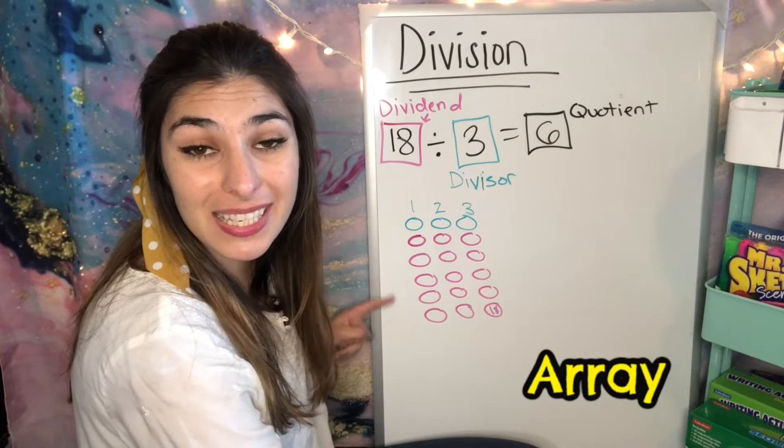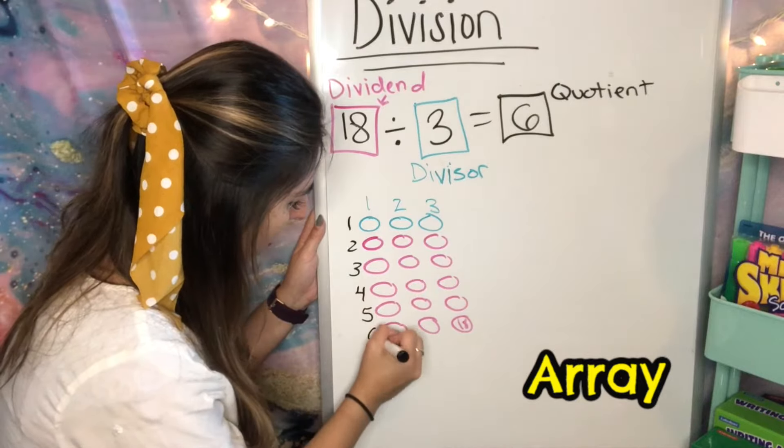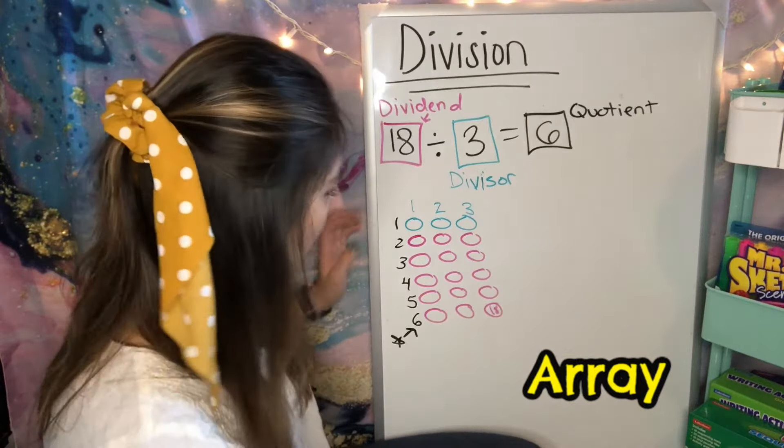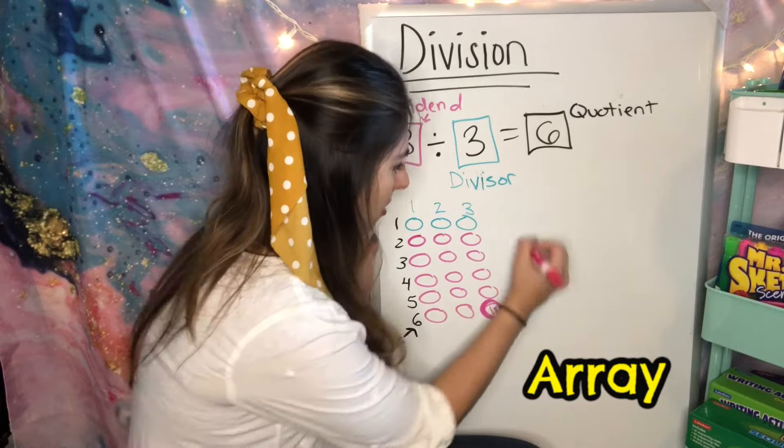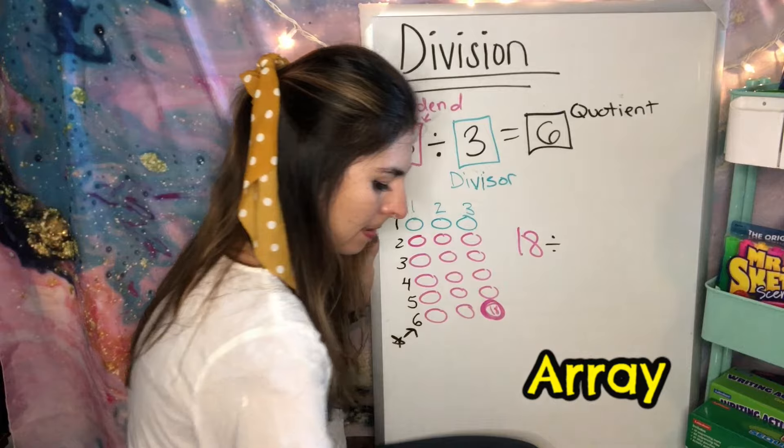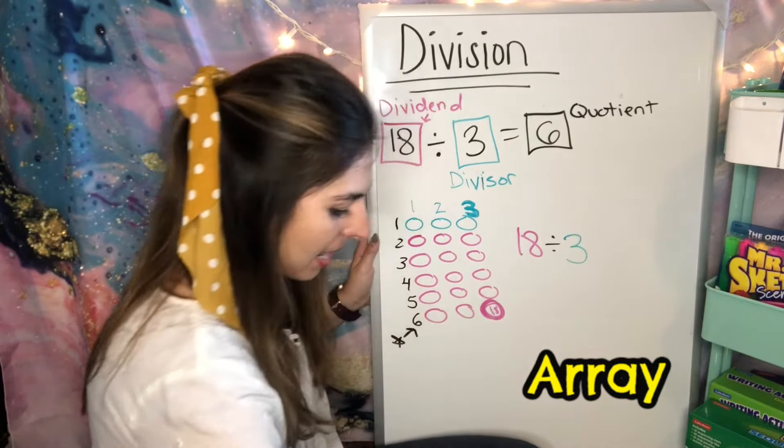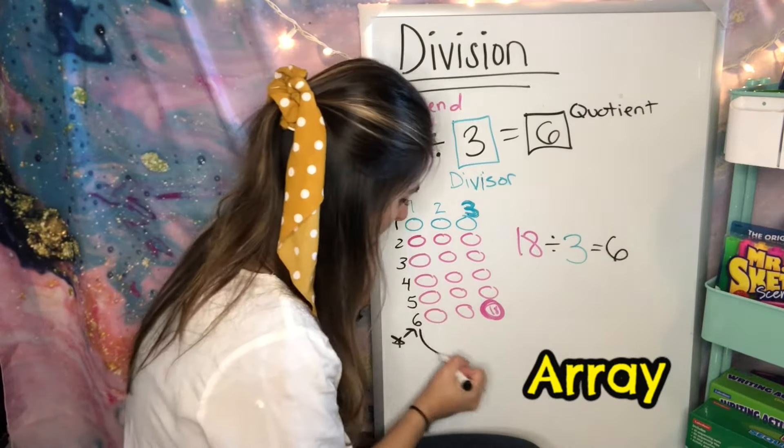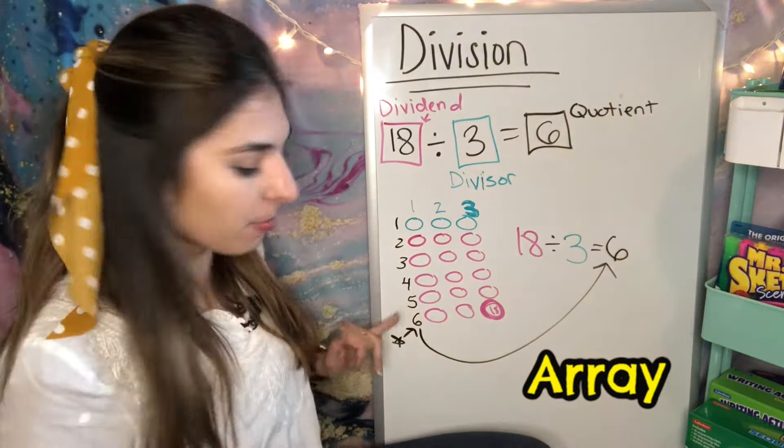I'm going to count up my rows to see how many there are, and that's going to be my quotient. So I see I have 1, 2, 3, 4, 5, 6. So right here, 6. That is my quotient. That's my answer. So I'm going to take all together, my big number, 18 right here. I'm dividing by this 3. And then I found that I have 6 rows. So start with that 3. Make sure you got all 18 in there. Count up your rows.